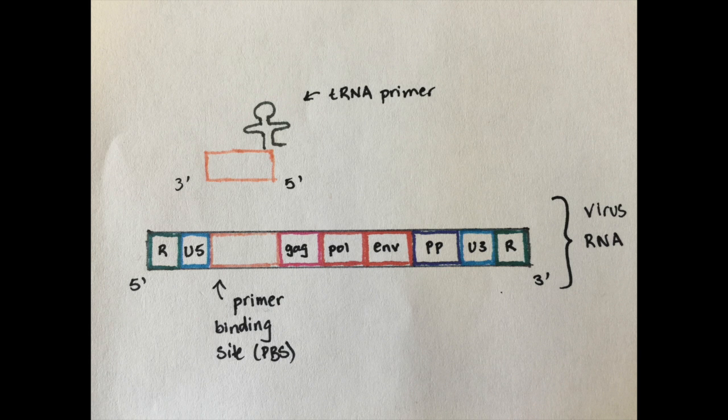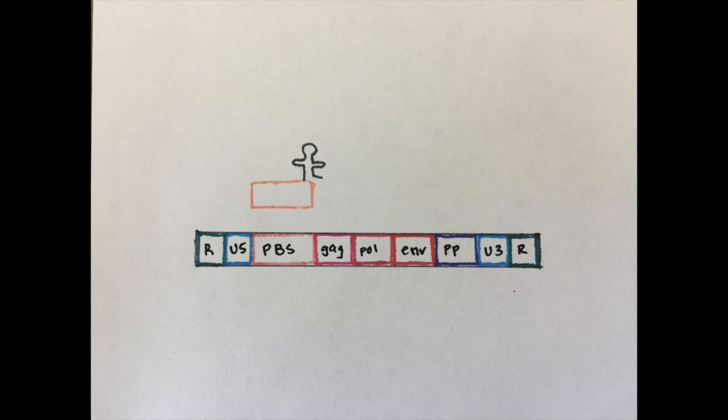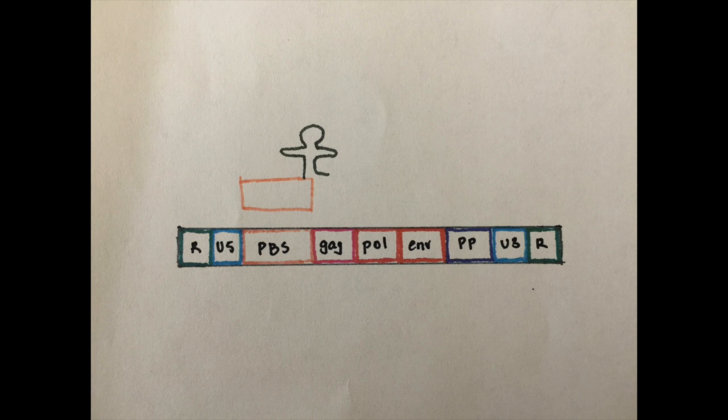A specific cellular tRNA acts as a primer and hybridizes to a complementary part of the virus RNA genome called the primer binding site, or PBS.